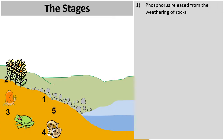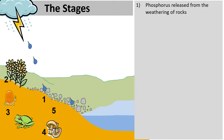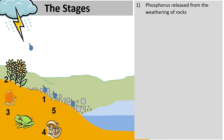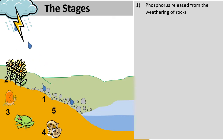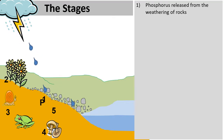Let's explore the stages of the phosphorus cycle. In area one, this is where phosphorus comes from — from the weathering and breaking down of rocks. When it rains and rocks are exposed to the elements of nature, minerals from rocks including phosphorus are released into the soil.